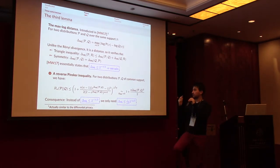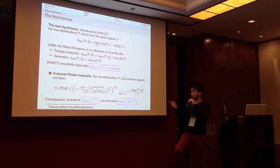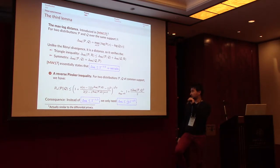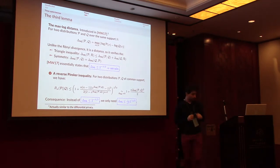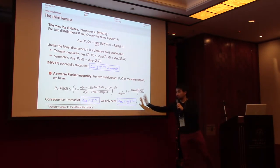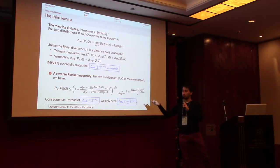The practical consequence is that instead of needing the max-log distance to be less than 2^(−λ/2), you only need it to be essentially less than 2^(−Q/2), replacing λ by log₂(Q). Typically you replace a value of 256 by 64.